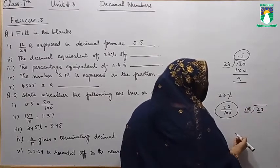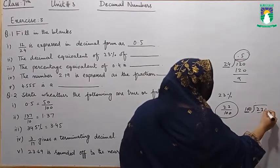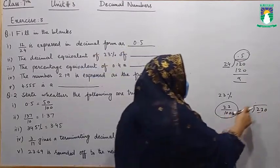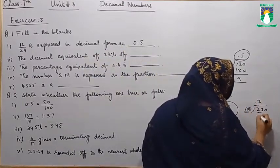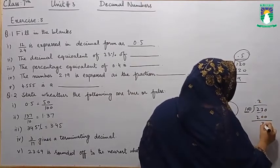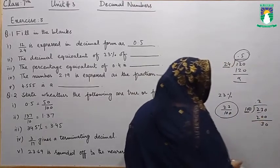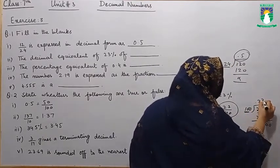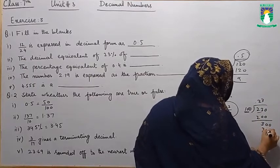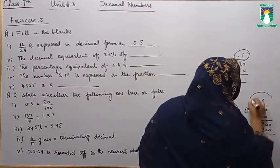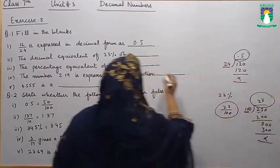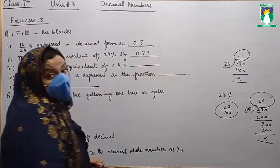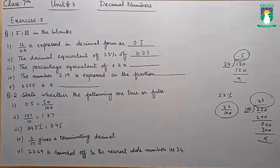23 percent is equal to 0. — 10 twos are 230, 10 threes are 300 — so 0.23 is your answer. Now students...